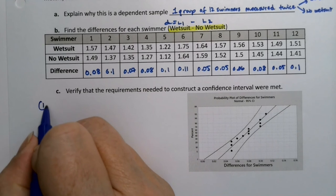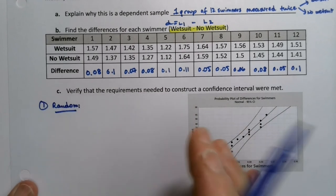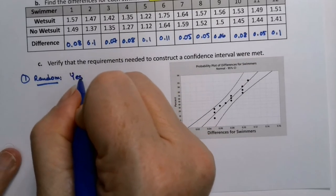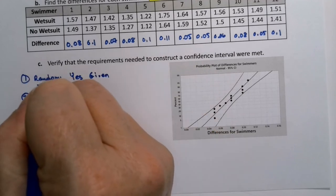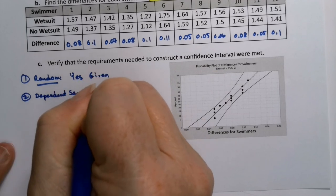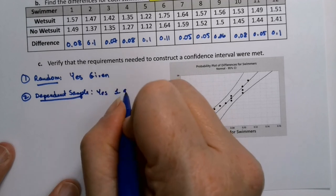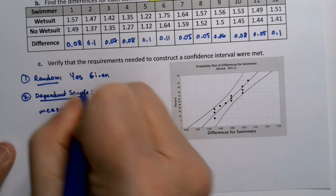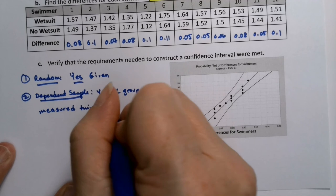So we know that we have random because it's given. It stated it was a random group of 12 competitors. So this is yes, because it was given. Number two, we need it to be a dependent sample. But of course, we already explained that up above, but we'll just say it again. So this is yes, because it was one group measured twice.